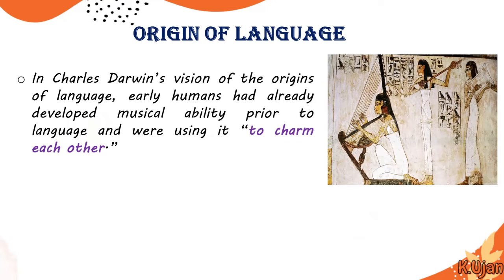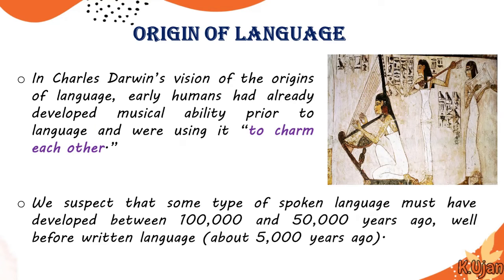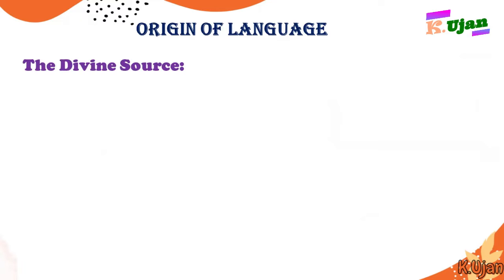In Charles Darwin's vision of the origin of language, early humans had already developed a musical ability prior to language and were using it to charm each other, and that is how humans started speaking language. We suspect that some type of spoken language must have developed between 100,000 years ago and 50,000 years ago, well before written language about 5,000 years ago.